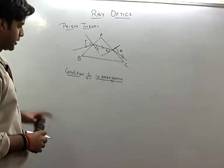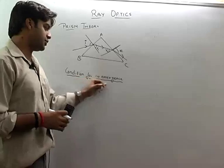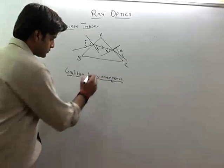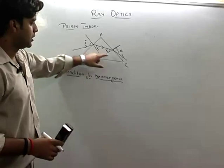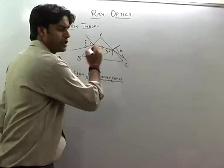Let us see what we will analyze. First of all is the condition for no emergence. Condition for no emergence means that this is the total internal reflection here.